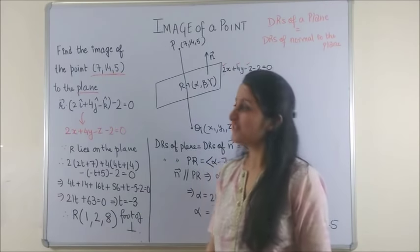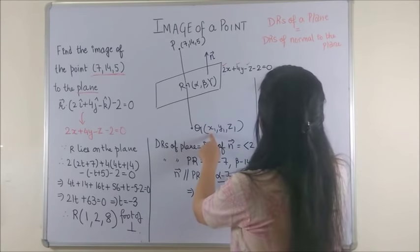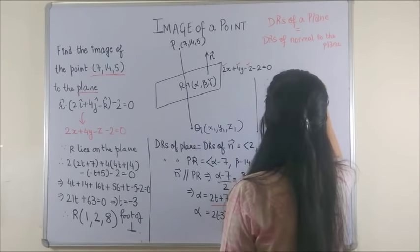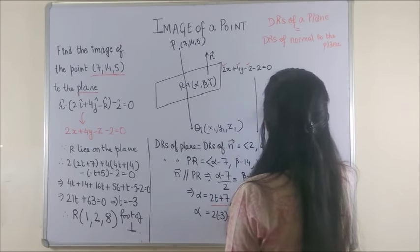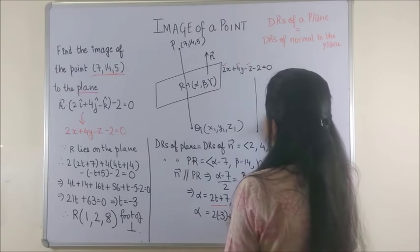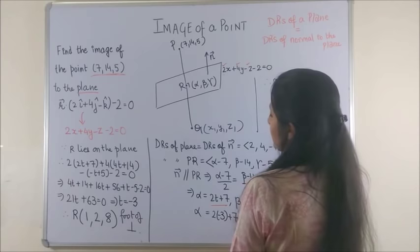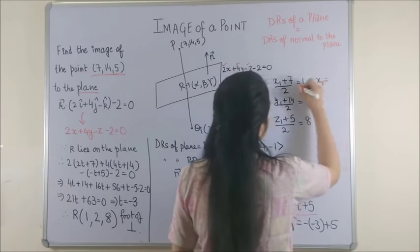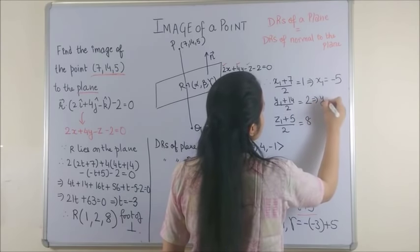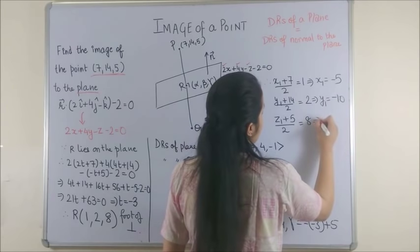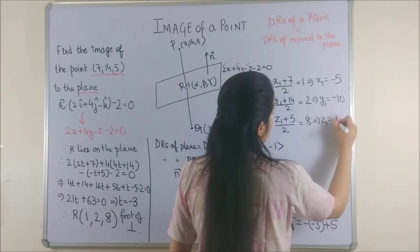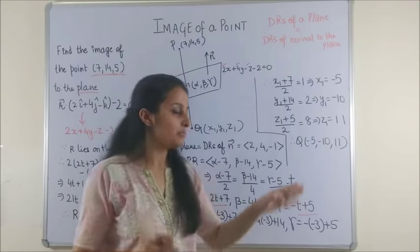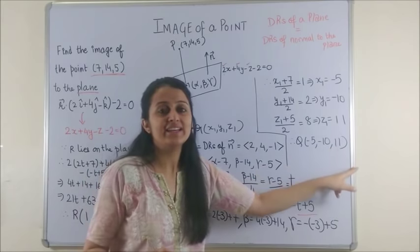Let's now use the midpoint formula. You would say therefore (x₁ + 7)/2 = 1, (y₁ + 14)/2 = 2 and (z₁ + 5)/2 = 8. On simplifying you get x₁ to be -5, y₁ to be -10 and z₁ to be 11. Therefore the point Q which is also the image of the given point P happens to be (-5, -10, 11).